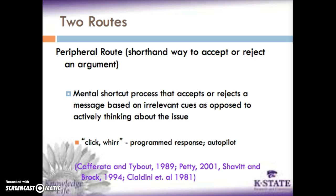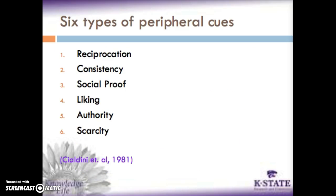There are six types of peripheral clues: reciprocation, consistency, social proof, liking, authority, and scarcity. Reciprocation describes a feeling of obligation to believe a message based on a previous experience. Consistency describes when one relies on thoughts and influence they had in the past. Social proofing is very similar to peer pressure. Liking refers to the attractiveness or view that the message source is likable. Authority refers to when a source is viewed as an expert or authority figure that should be trusted and obeyed. Scarcity is when the message is perceived as only being present for a short time and must be accepted quickly.